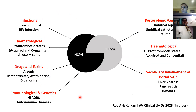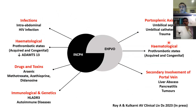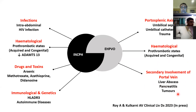NCPH and EHPVO have specific risk factors: infections, prothrombotic states, drug exposures, and immunological conditions. For EHPVO specifically, there is history of umbilical sepsis or umbilical catheterization — but remember, these histories come out in less than 30% of patients. Many of these turn out to be hematologically prothrombotic states. Importantly, patients who develop liver abscess, pancreatitis, tumors, or who have undergone splenectomy also tend to have these features.